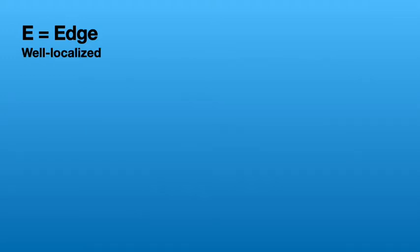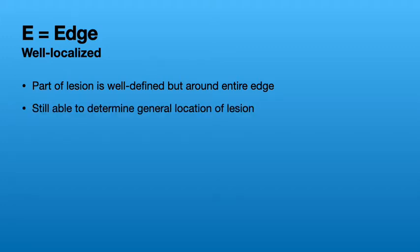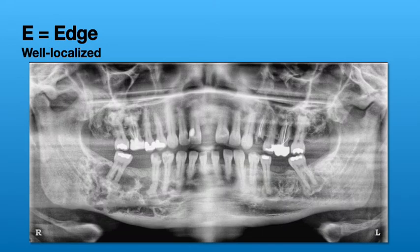The third category falls in between well-defined and ill-defined, because not everything fits neatly into either category. It is called well-localized. A well-localized lesion is one where part of the lesion is well-defined, but you can't trace the entire edge around it — you can still generally determine the overall location of the lesion. On this panoramic radiograph, I would classify this as well-localized, as we can tell it's in the tooth-bearing regions of the maxilla and mandible, but can't clearly trace the outline everywhere.